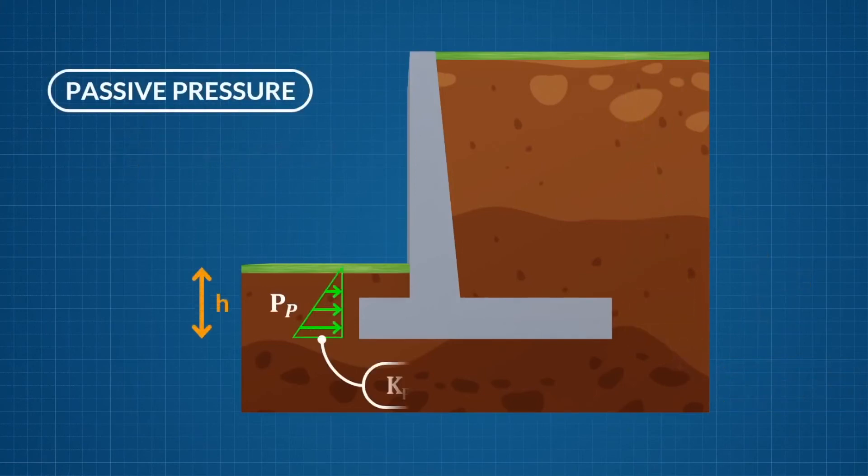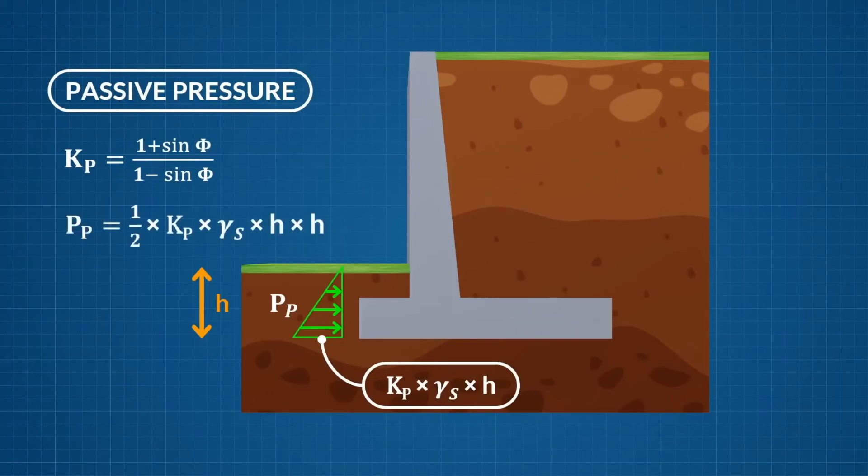The passive pressure acting on the toe side of the retaining wall acts to stabilize the wall. The coefficient of passive pressure Kp is calculated by this expression. This pressure can be excluded from design calculations, if so desired, to make the calculation more conservative.